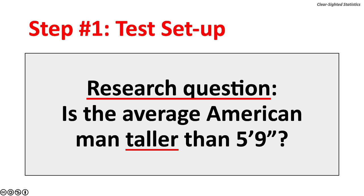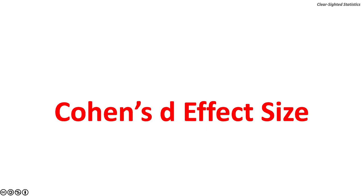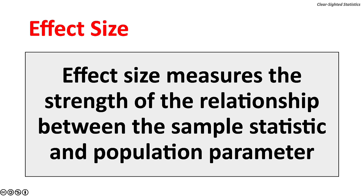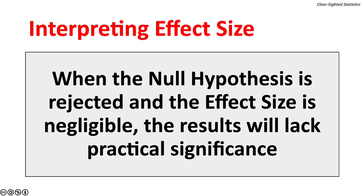The next step is to determine the sample size by running an a priori statistical power calculation. To make this calculation, we must first estimate the effect size. The estimated effect size can be an educated guess by the researcher — typically a value large enough that the results would have practical significance, meaning the results have real-world implications. We will use Cohen's D, a widely used standardized effect size. Effect size measures the strength of the relationship between the sample statistic and population parameter. When the null hypothesis is rejected and the effect size is negligible, the results will lack practical significance. This can happen when the sample size is too large — in essence, the test is overpowered.